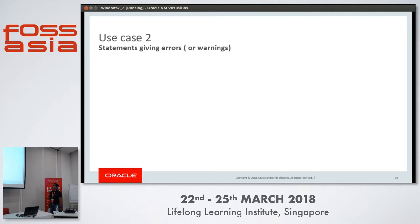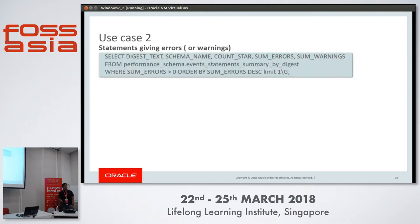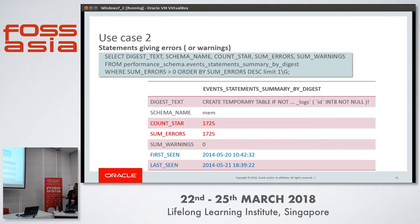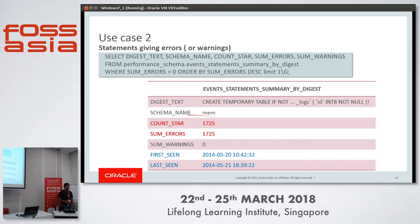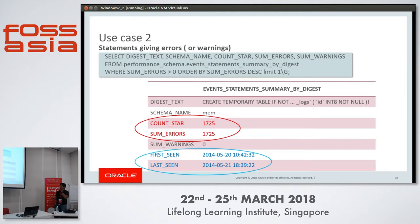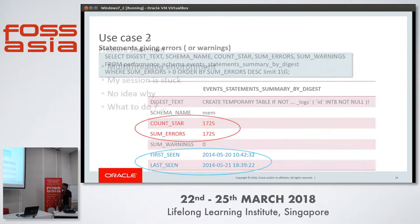Another use case: suppose there are queries giving errors on the server. Can I get information about them? We have events_statement_summary_by_digest — digest is the categorization of structurally similar statements with consolidated statistics in one row. This table shows, for example, that CREATE TEMPORARY TABLE statements have been executed 1,725 times and given errors 1,725 times — it has never been executed successfully on the server. We can also get when the statement was first executed and when it was last executed.